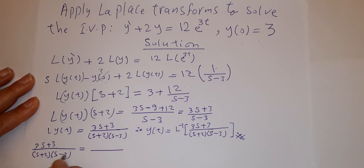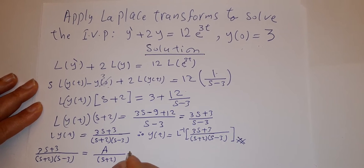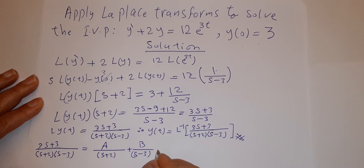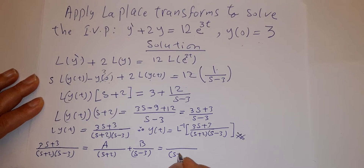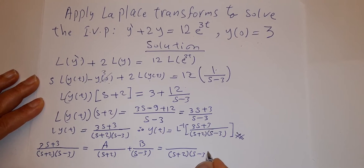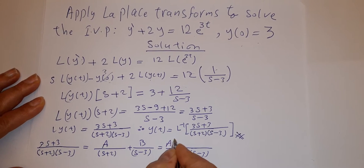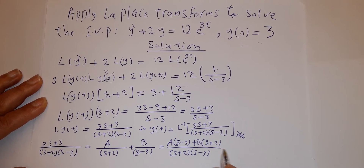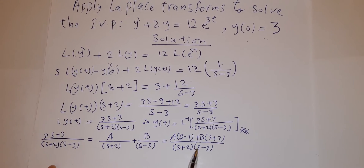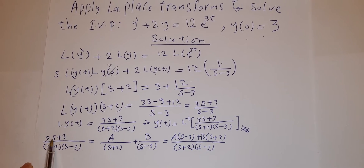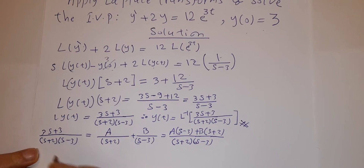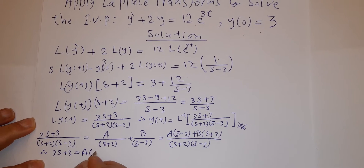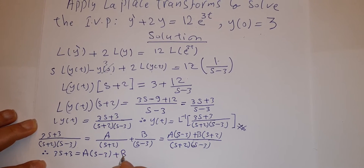Since we have two linear factors in the denominator, we write A/(s + 2) + B/(s − 3). Taking the common denominator (s + 2)(s − 3) and cross multiplying, we get A(s − 3) + B(s + 2). Comparing numerators, 3s + 3 = A(s − 3) + B(s + 2).